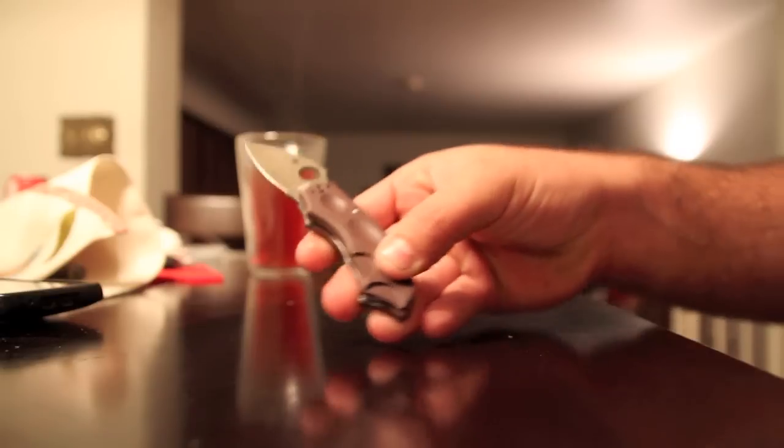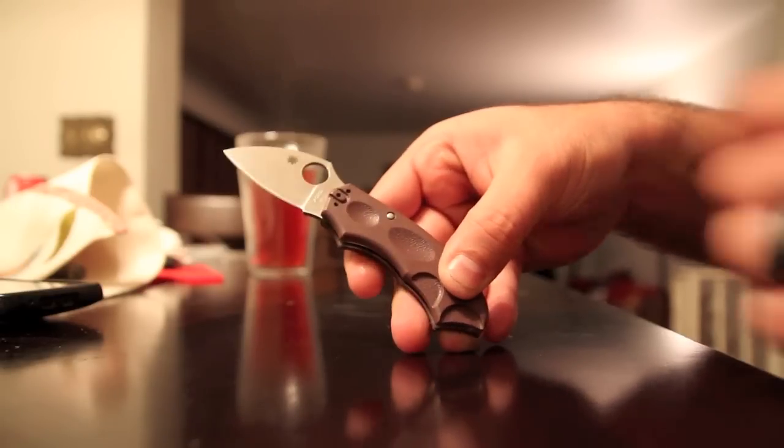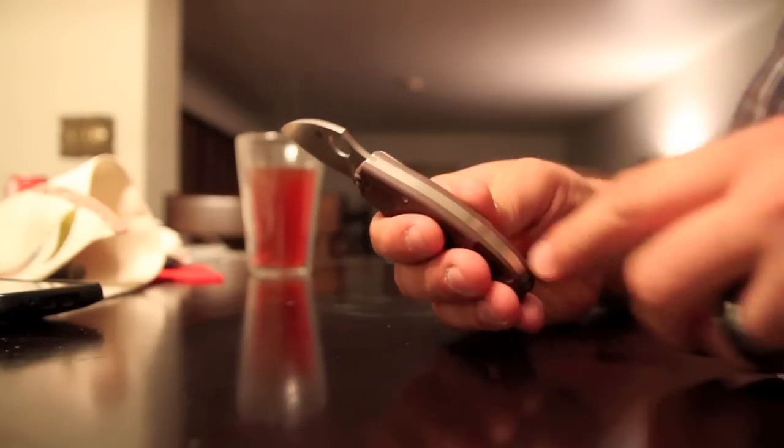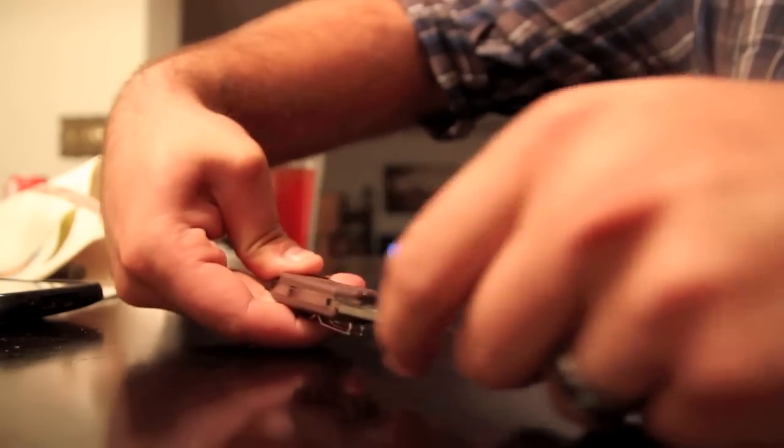Hopefully you can see that. Another place you can see it is up here. See the liner pivots off the scale, pivoting on this pin right here. And that releases the tension on the lock bar and lets the blade swing free.